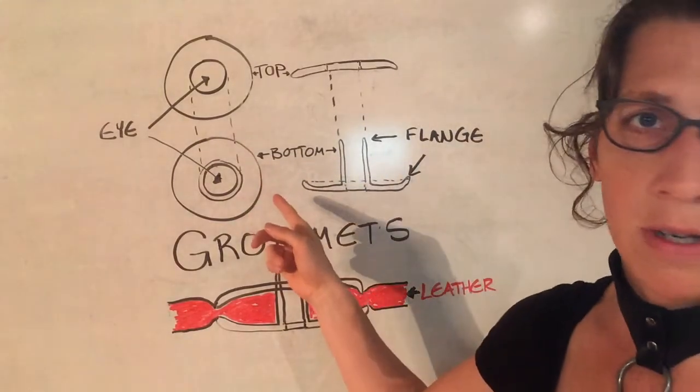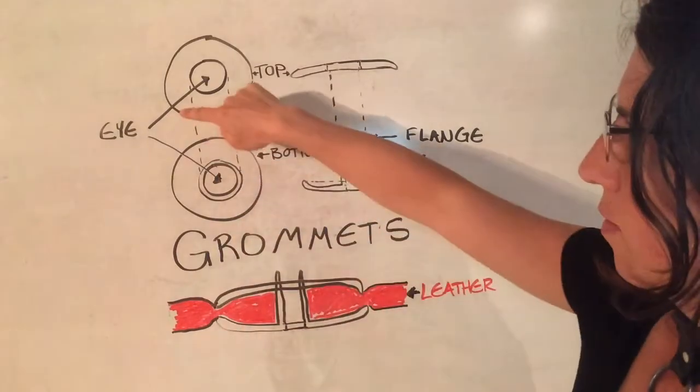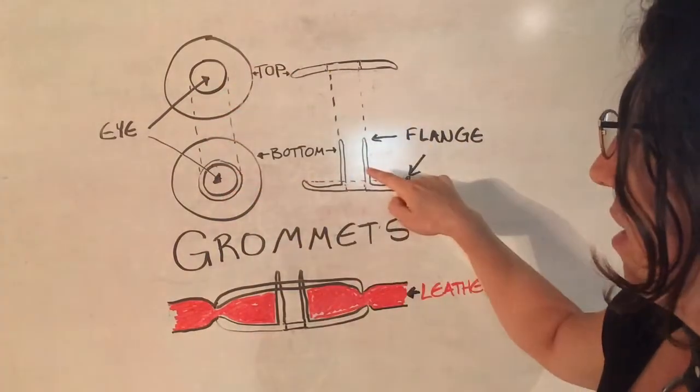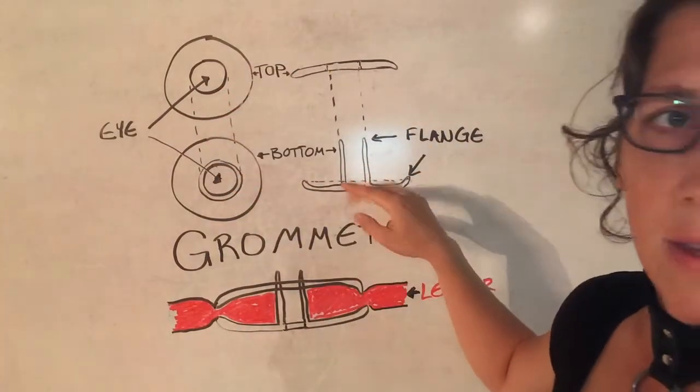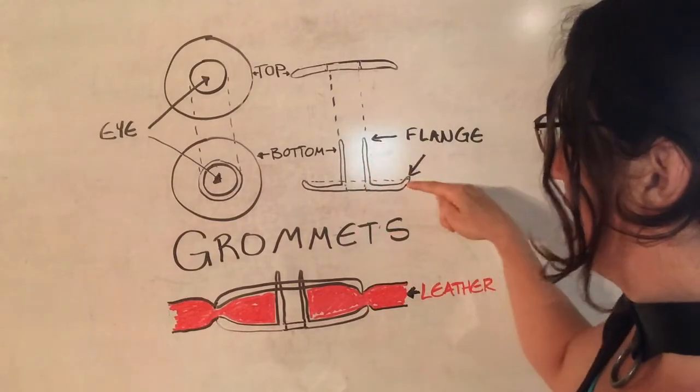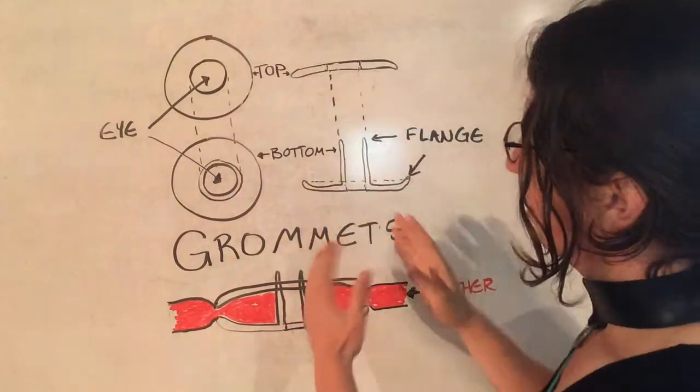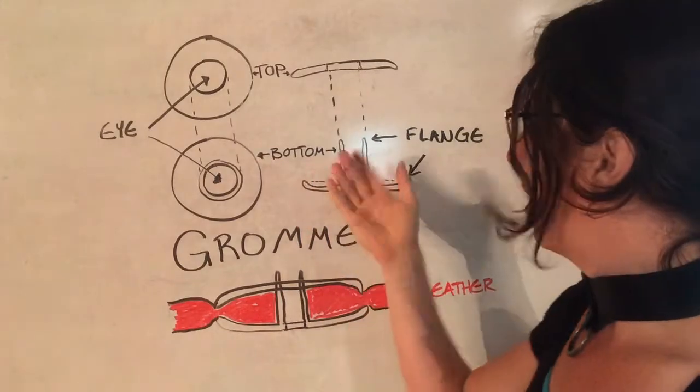So we've got an exploded view on top, right? Engineering style drawing where we have these two eyes. And what we're really focused on is the flange. So the flange comes up and it gets inserted through the leather.